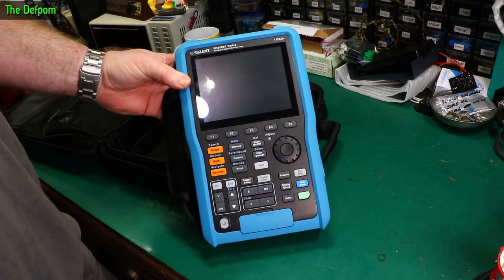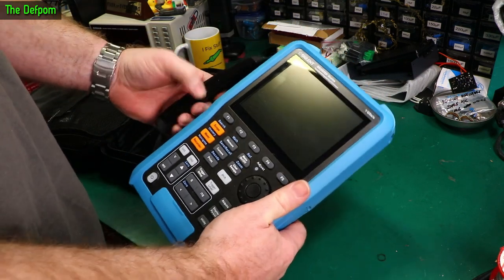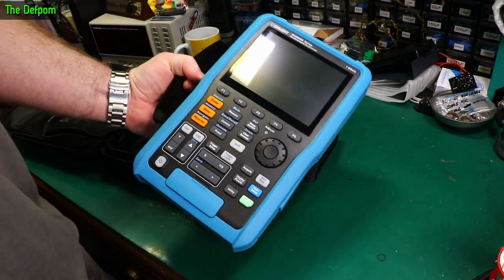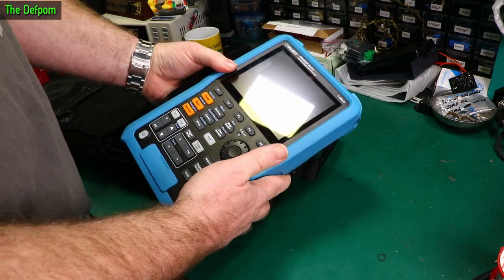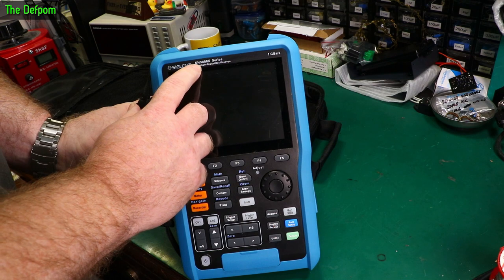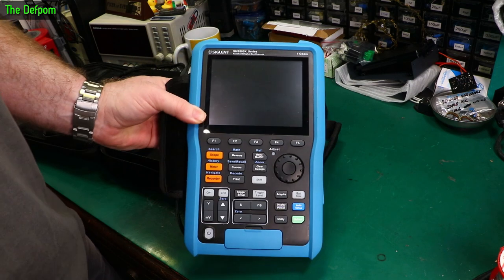So it's a fairly sizable thing. If you want to see a picture of one of these things, you don't think it's actually that big. You think it's like a multimeter size. No, no, no, it really isn't. So this is the SHS 800X series. It's not the 800 series, it's the 800X. It's a newer version.